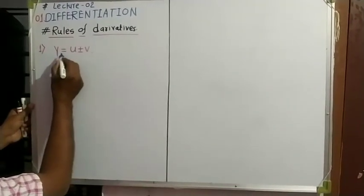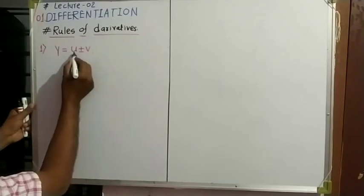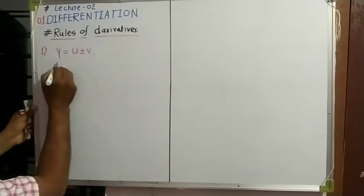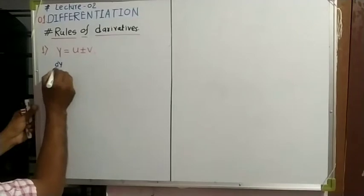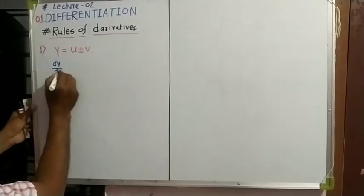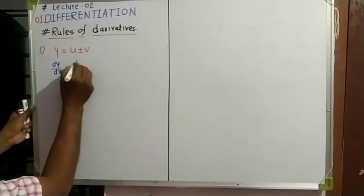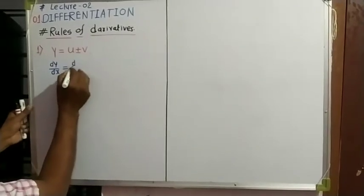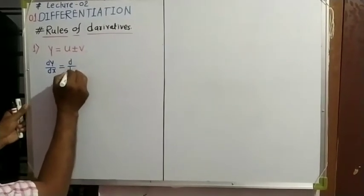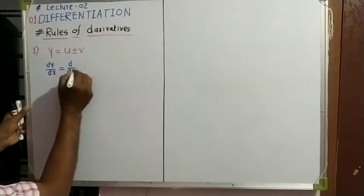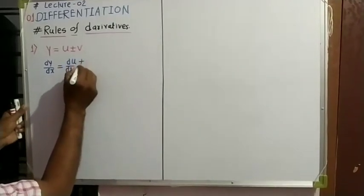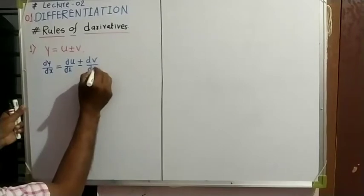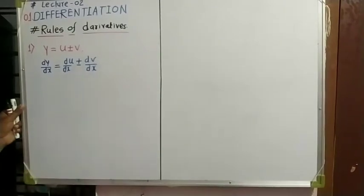If y is equal to u plus or minus v and we take its derivative, the differentiation with respect to x is: dy/dx equals d/dx of u plus or minus dv/dx.